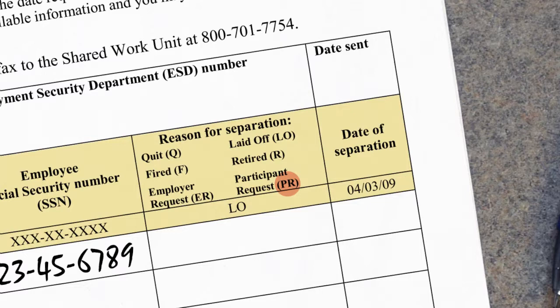To recap the abbreviations: Q for quit, F for fired, LO for laid off, R for retired, ER for employer requested, or PR if the participant requested removal from the program.